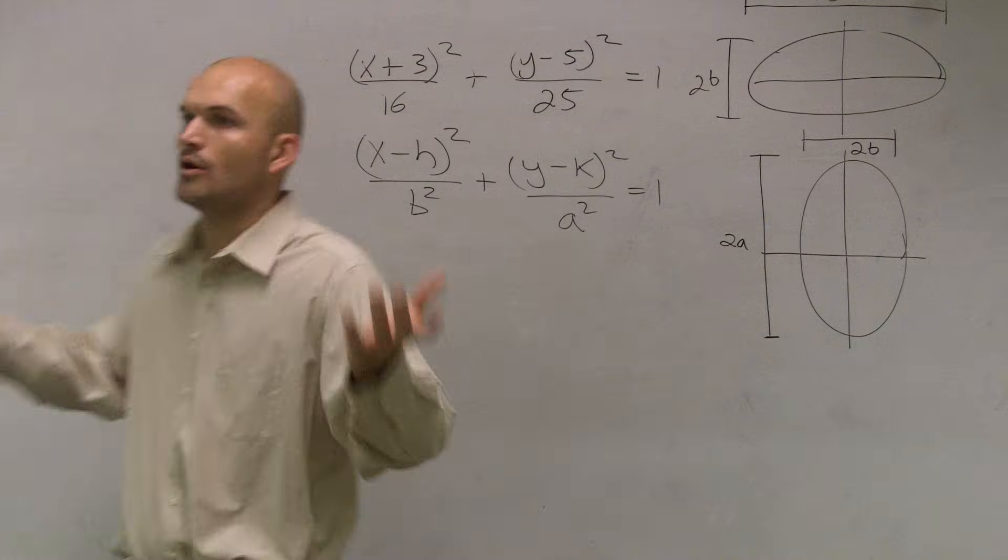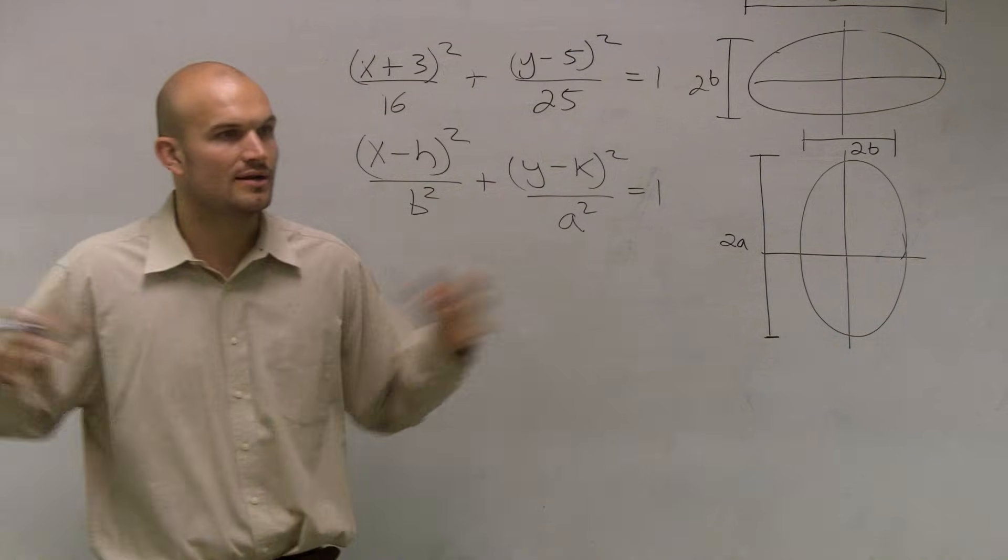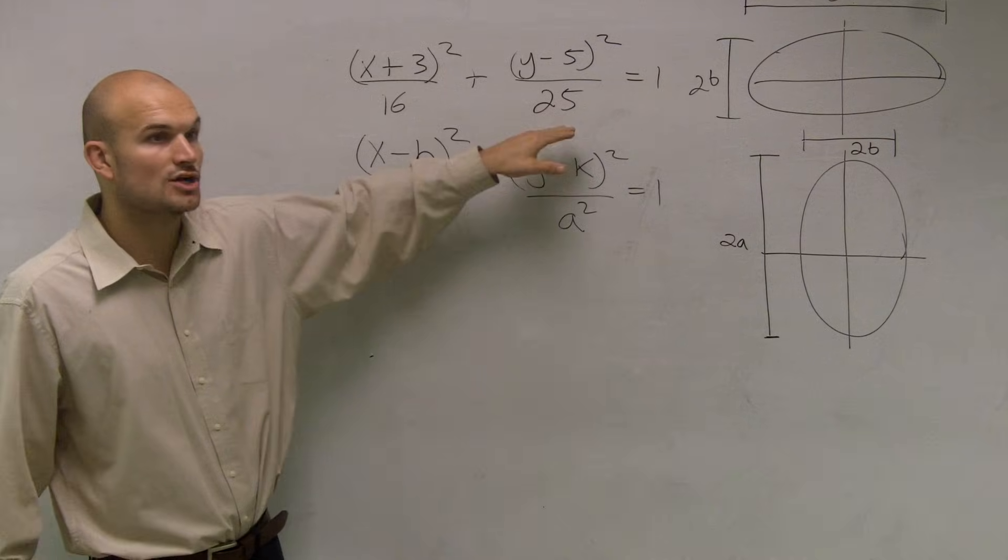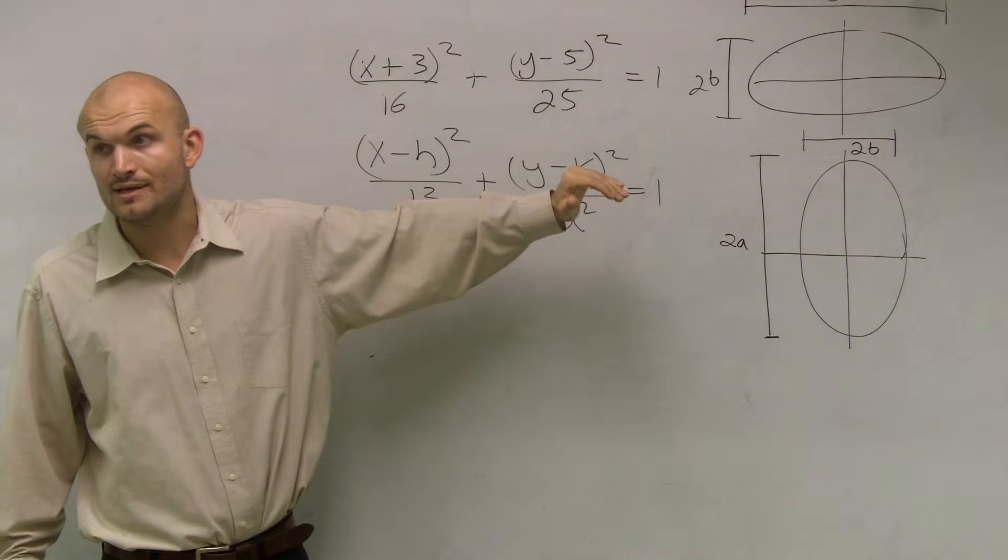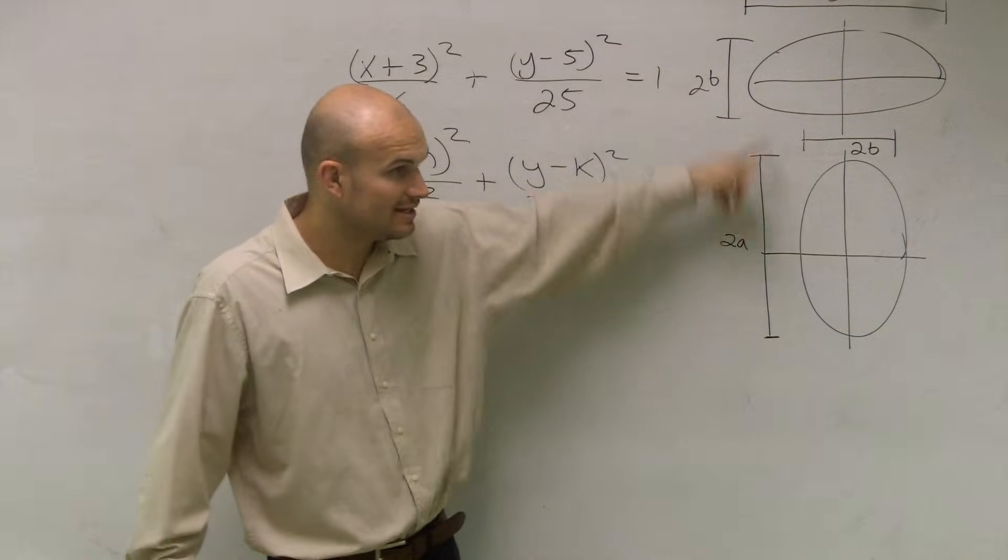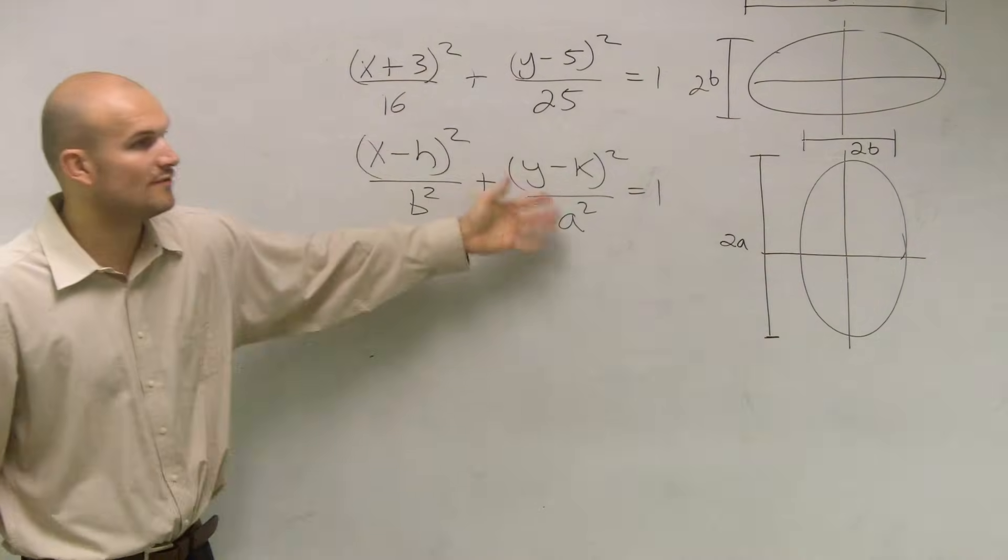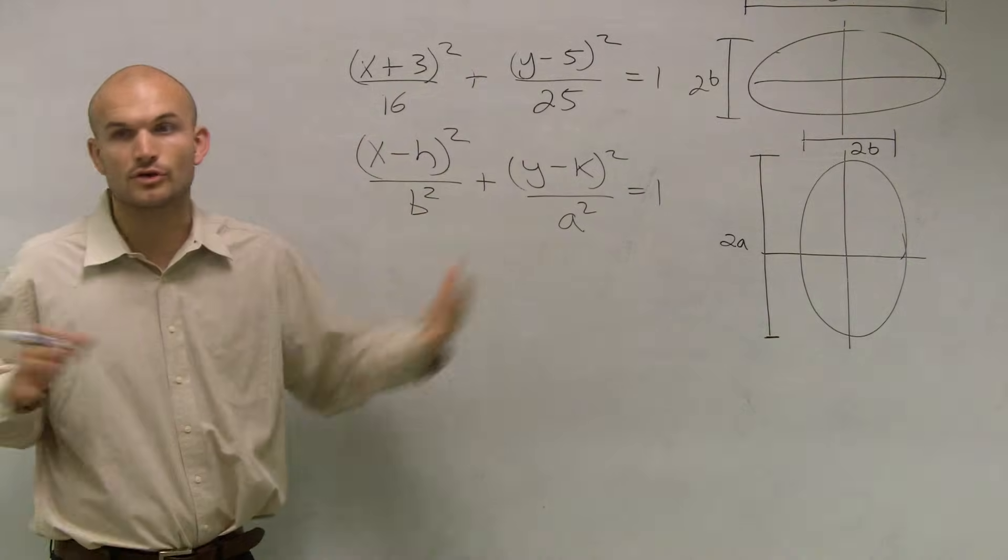Because you're going to have to be able to determine that just like the parabolas. Parabolas is a little bit easier because you remember, x squared, that's vertical, right? Or y squared, that's going to be horizontal. Here, you just need to determine what is my larger number because a is always larger than b. Your a is always larger than your b. Since my a is larger than my b, whatever my a is under, that's going to determine if it's vertical or horizontal.